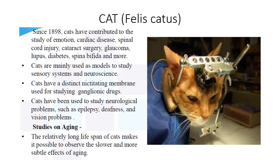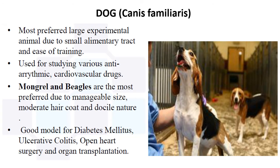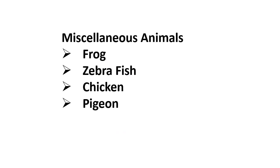Dog — the most preferred large experimental animal due to its small alimentary tract and ease of training. Dogs are used for studying various anti-arrhythmic and cardiovascular drugs. Mongrels and beagles are the most preferred due to their manageable size, moderate hair coat, and docile nature. The dog is a good model for diabetes mellitus, ulcerative colitis, open heart surgery, and organ transplantation.